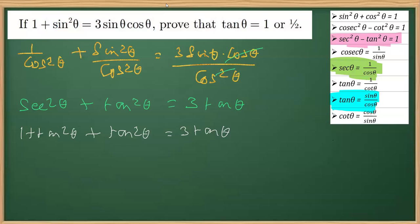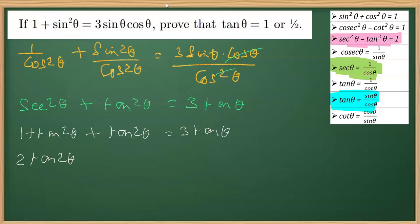Now we are going to get a quadratic equation. Writing it down: tan²θ plus tan²θ gives us 2tan²θ minus 3tanθ plus 1 equals 0.